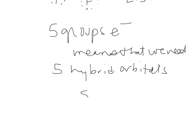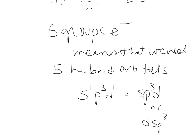You count them out: 1S and 3Ps and 1D, for a total of 5. So we say SP3D — or DSP3, it doesn't matter which way you say it. This is the type of hybrid, and you need 5 of them.